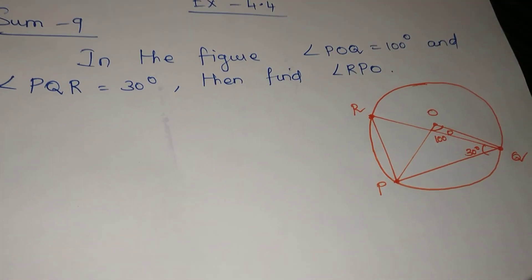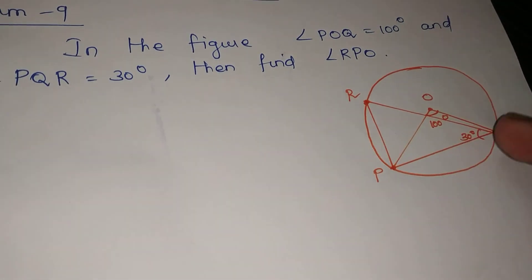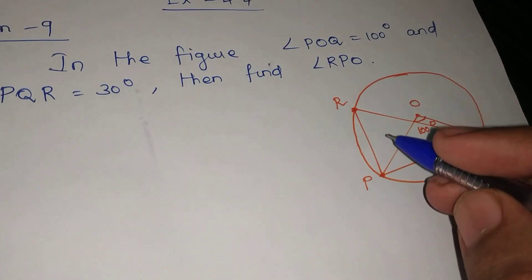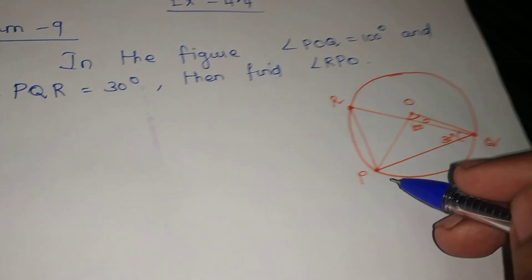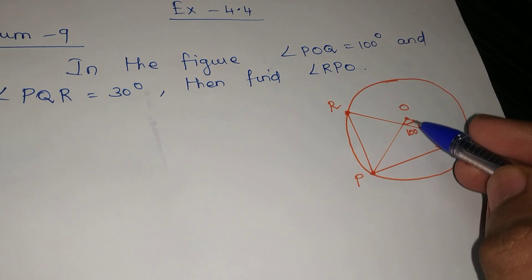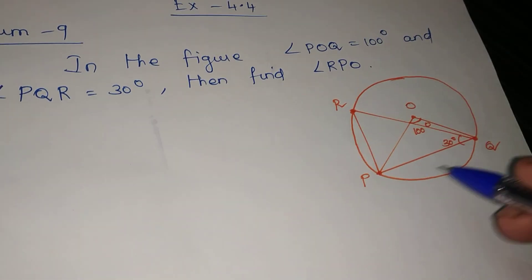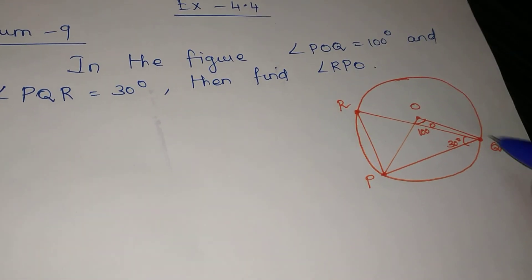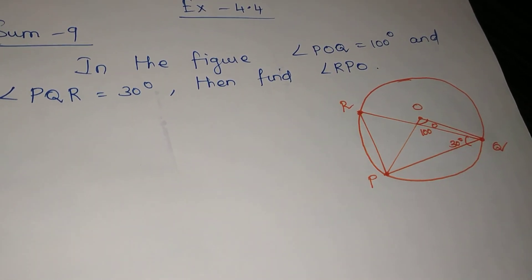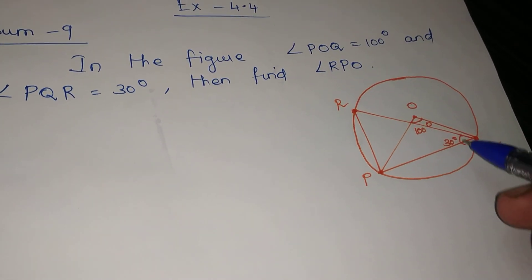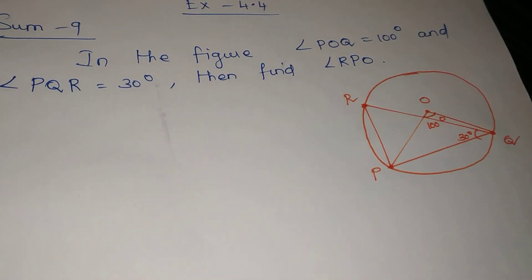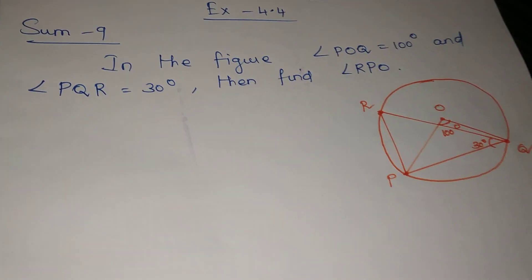Ok? So, angle POQ is 100 degrees and angle PQR is 30 degrees. We need to find angle RPQ.